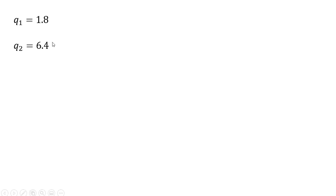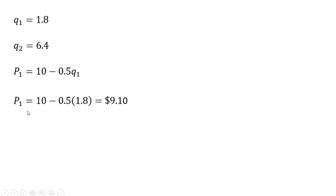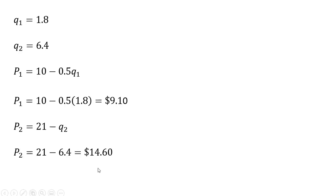So those were the output levels in each market. Let's get the prices. We'll plug 1.8 into the inverse market demand for market one — making that substitution, the price would be $9.10 in market one. And in market two, we're going to evaluate the inverse market demand at an output level of 6.4 to get a price of $14.60.